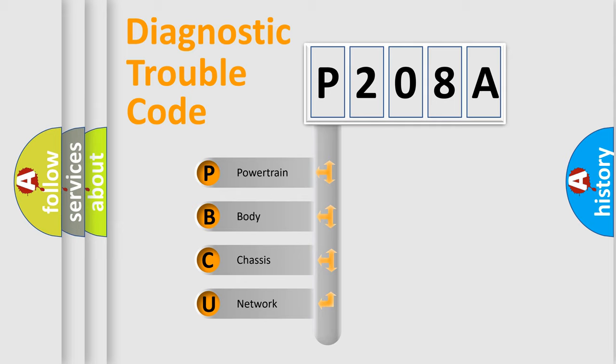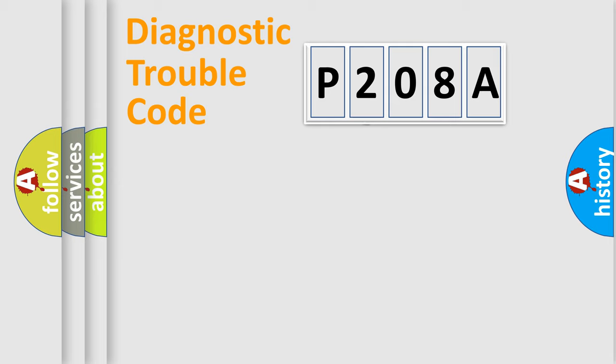We divide the electric system of an automobile into four basic units: Powertrain, Body, Chassis, and Network. This distribution is defined in the first character code.